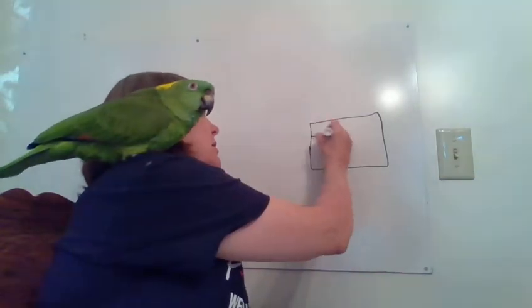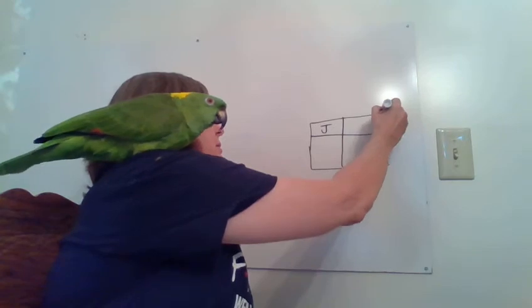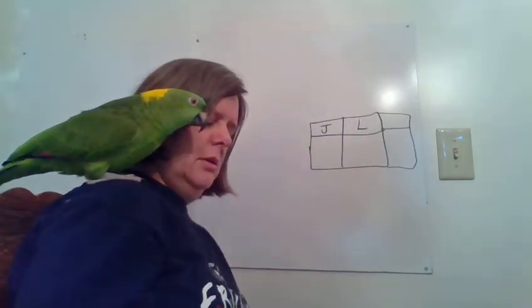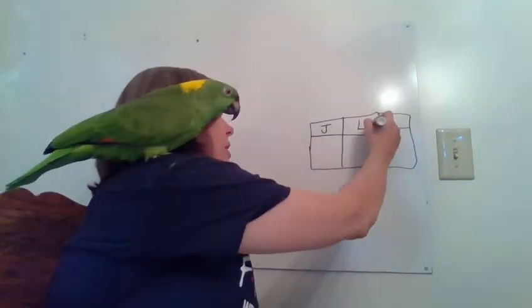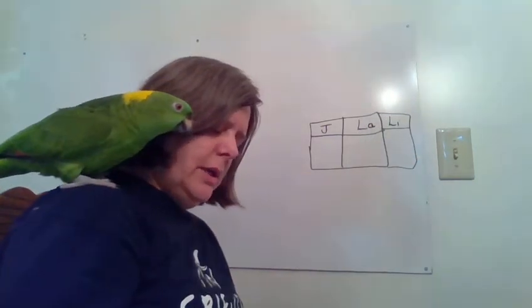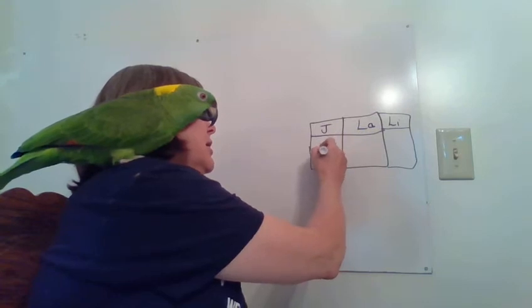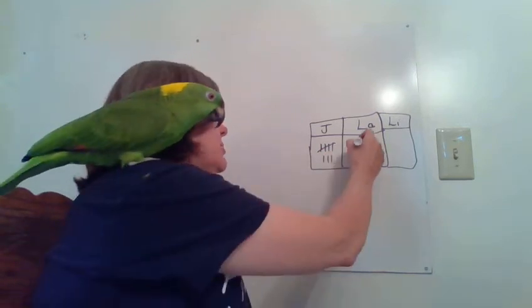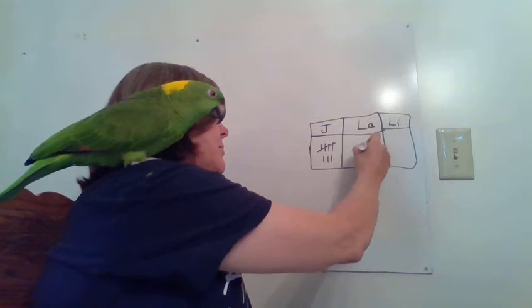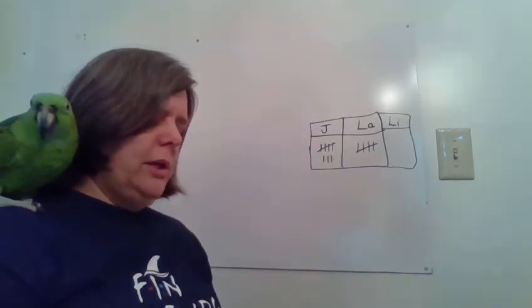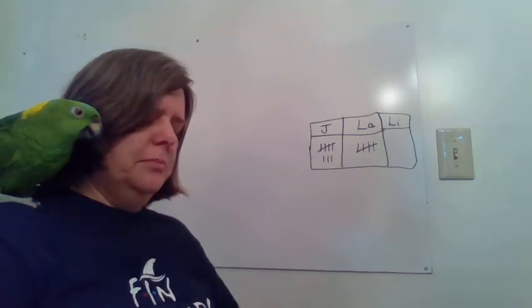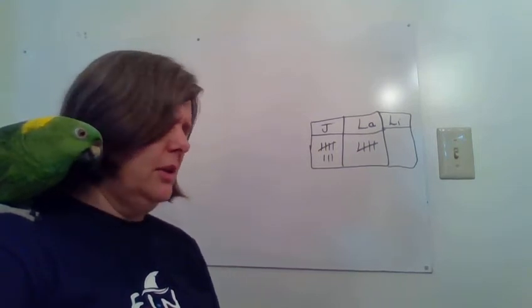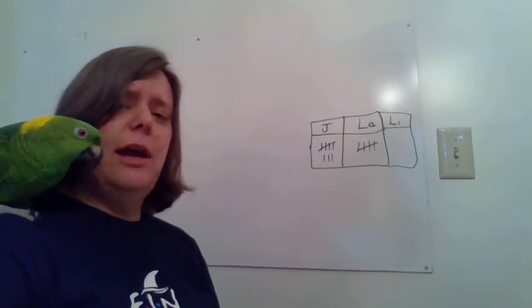I'm just going to put a J for Jose, L for Laura, and Li for Linda. So it looks like Jose has read eight books. Laura has read five books. Now, we can see here that right now we don't know how many Linda has read, but that's what the problem is going to ask us to find out. We like to figure out what's the problem going to ask us to figure out. In this case, I'm betting we're going to have to figure out how many Linda has read.